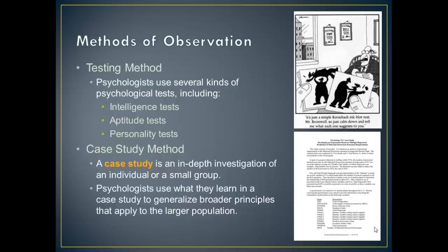Researchers can't study that with naturalistic observation — an experiment is out of the question since it's unethical — so sometimes a case study is the only way to get certain types of information. The disadvantage is that researchers can't apply the results to other people. We can't assume that if one person had the same experiences growing up, he or she would turn out just like the person in the case study, because there are too many complicating factors.